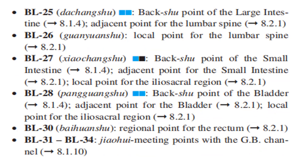Bladder 26 is the local point for the lumbar spine. Bladder 27 is the Back-Shu Point of the Small Intestine, the adjacent point for the small intestine, and the local point for the ileo-sacral region. Bladder 28 is the Back-Shu Point of the Bladder, the adjacent point for the bladder, and the local point for the ileo-sacral region. Bladder 30 is the regional point for the rectum.